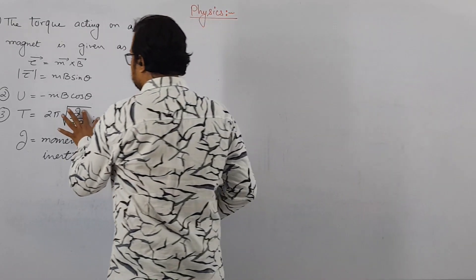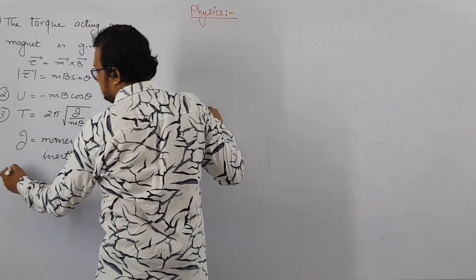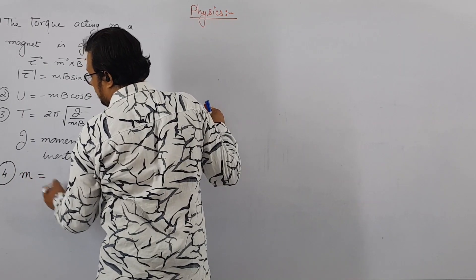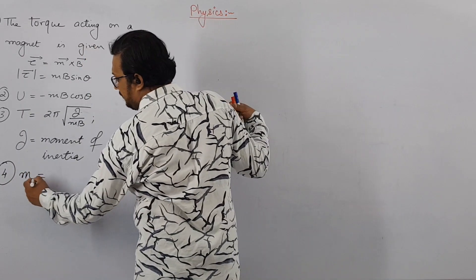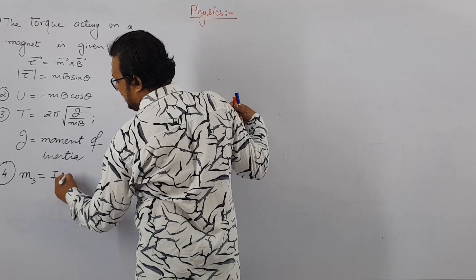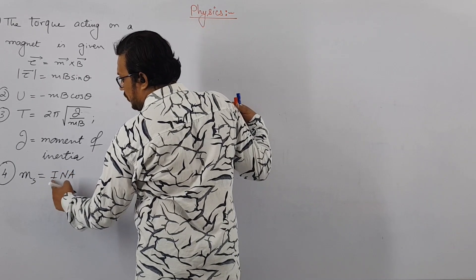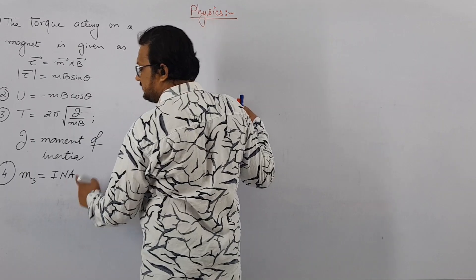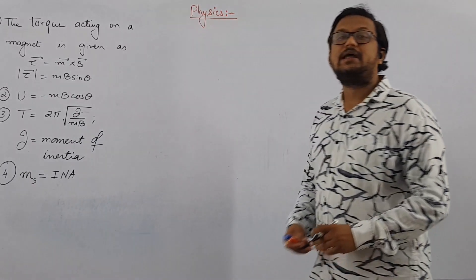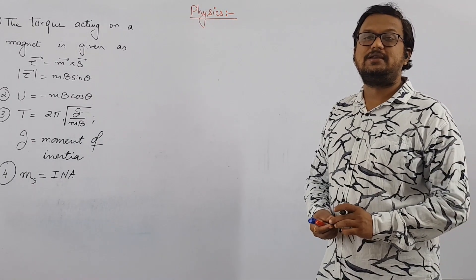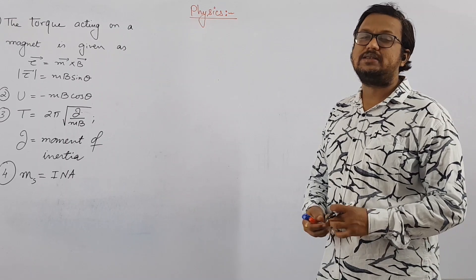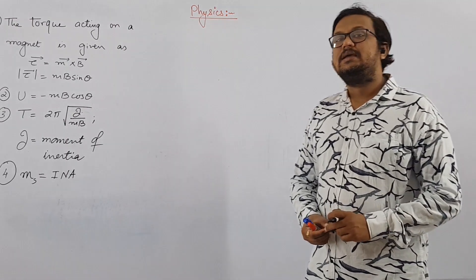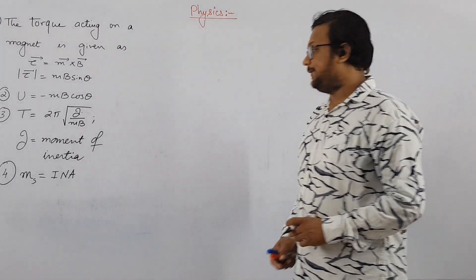The magnetic dipole moment M for a solenoid is given as M equal to I N A, where I is the electric current, N is the number of turns, and A is the cross-sectional area.